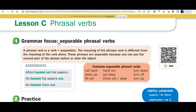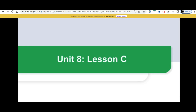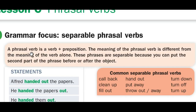Number one, grammar focus: separable phrasal verbs. Click on the QR code and you can watch a video. A phrasal verb is a verb plus preposition. The meaning of the phrasal verb is different from the meaning of the verb alone. These phrases are separable because you can put the second part of the phrase before or after the object.